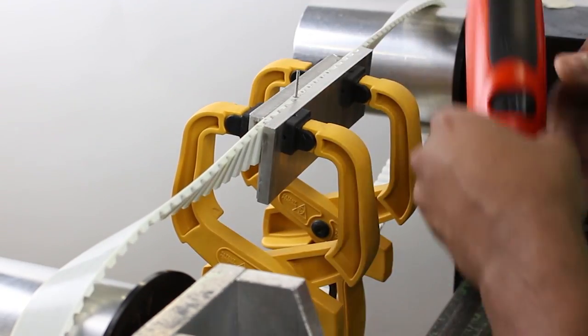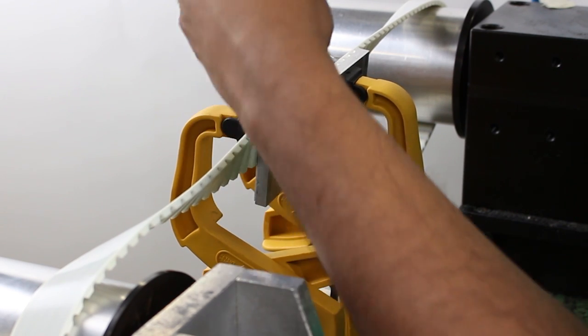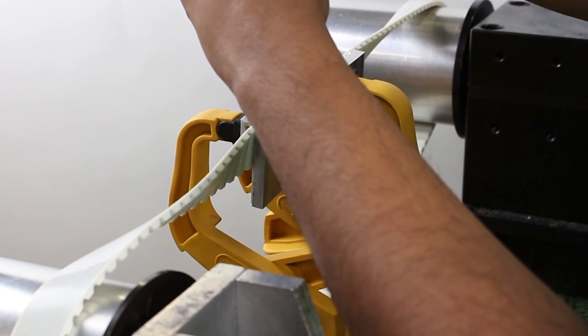Take the first pin and hand tighten it into the hole. And then you can use either a flat head screwdriver or as shown here, an electric screwdriver to fully drive the pin into the belt.